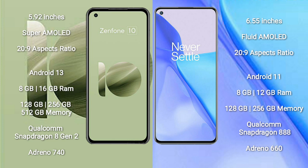Asus Zenfone 10 runs on the Android 13 operating system. OnePlus 9 runs on the Android 11 operating system. Asus Zenfone 10 comes with 8GB or 16GB RAM and 128GB or 256GB internal storage, Qualcomm Snapdragon 8 Gen 2 processor, and Adreno 740 GPU. OnePlus 9 comes with 8GB or 12GB RAM and 128GB or 256GB internal storage, Qualcomm Snapdragon 888 processor, and Adreno 660 GPU.